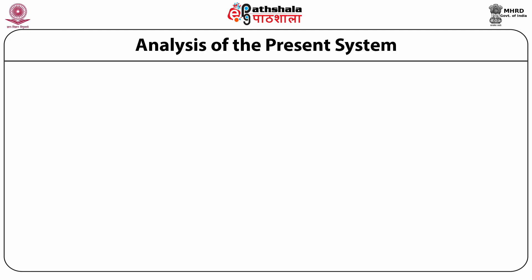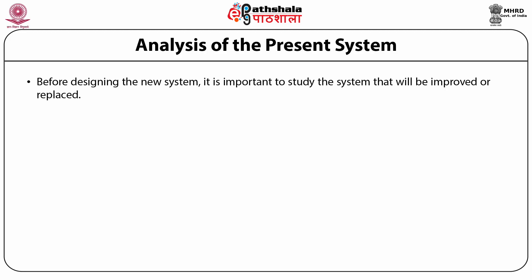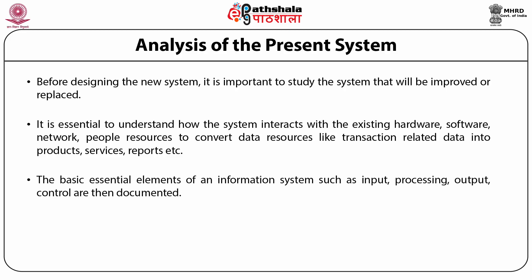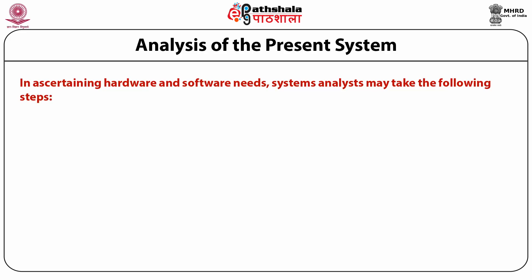Within the process of organizational analysis comes the analysis of the present system. Prior to designing the new system, it is very important to study the system that will be improved or replaced. It is essential to understand how the system interacts with the existing hardware, software, network, and people resources to convert data resources like transaction-related data into services, products, and reports. The basic essential elements of an information system such as input, processing, output, and control are then documented.